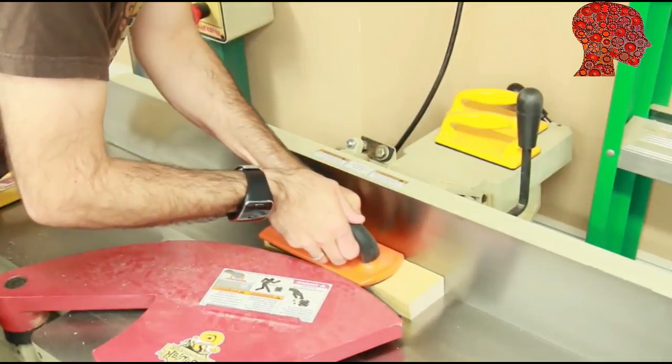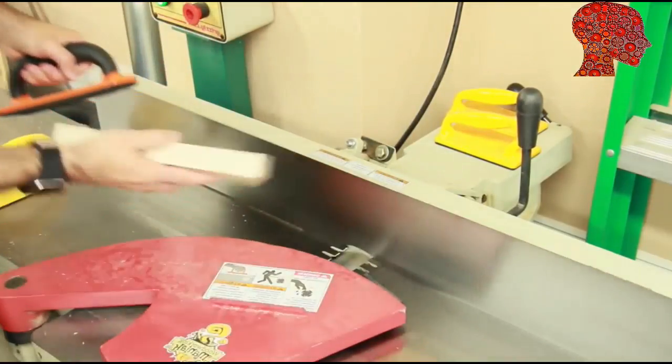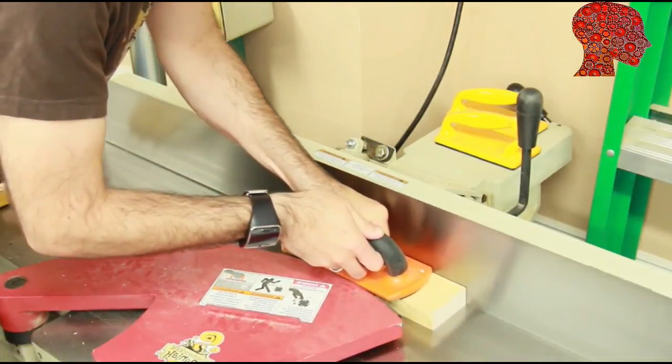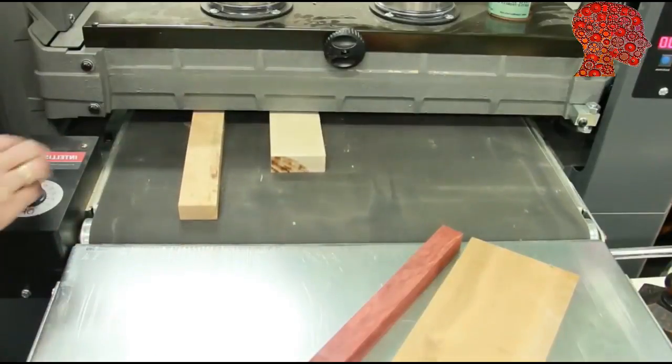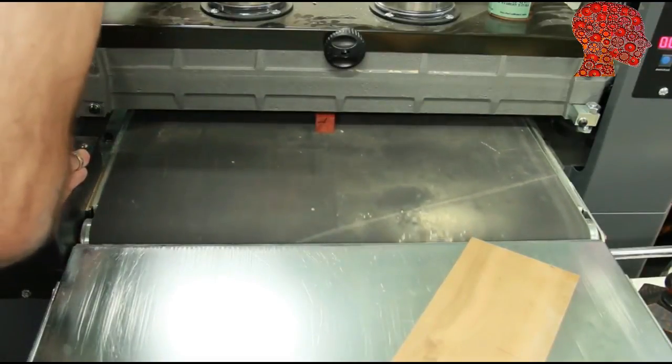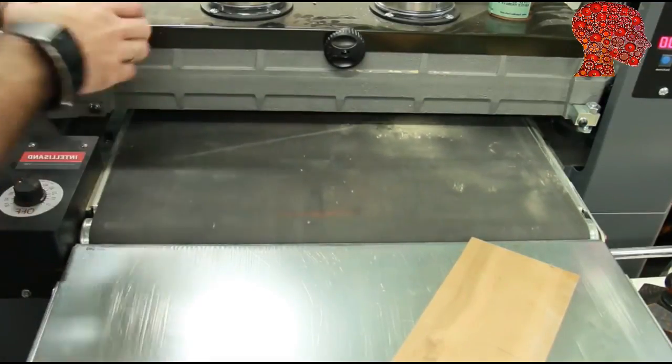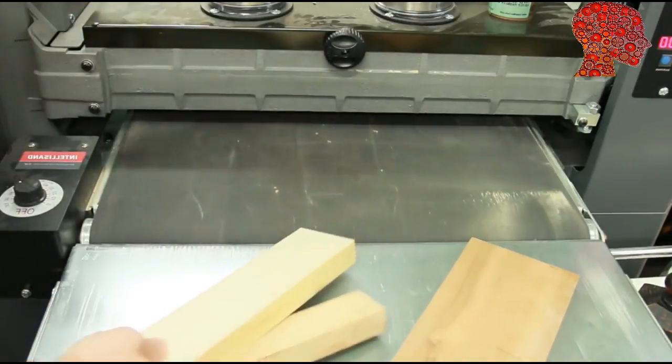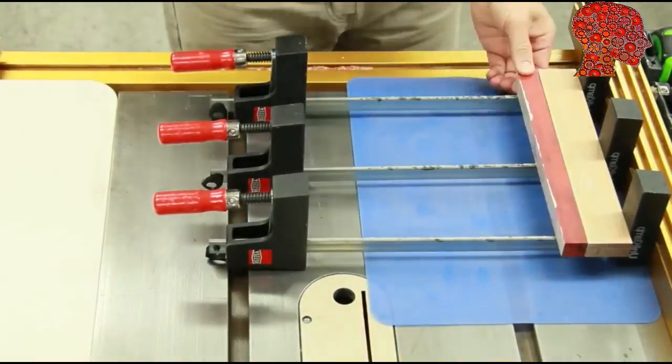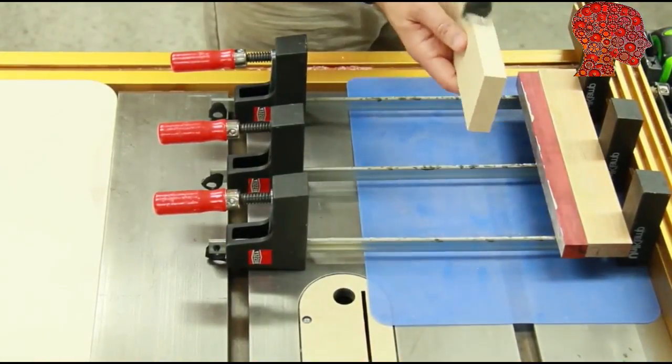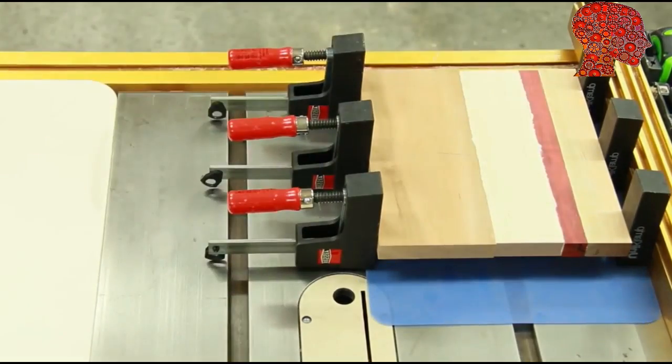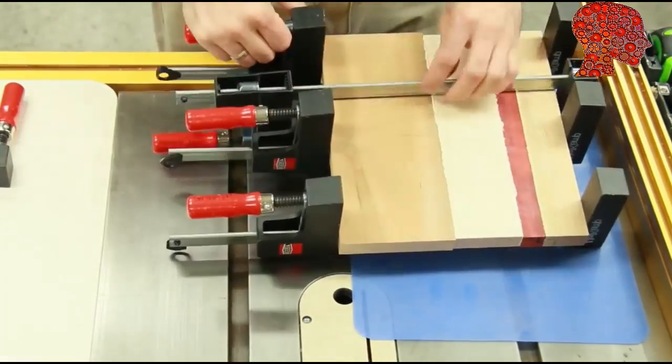Then at the jointer, I jointed one side to get all the boards nice and flat on one side, because these boards were all different thicknesses. I actually needed to get them to the same thickness. Now, to get them to the same thickness, I used my drum sander because they all had some different grain patterns. I didn't want to send them through my planer because that could have caused a lot of tear-out, especially on the curly maple. The curly maple would have definitely torn out. So I ended up sending them through my drum sander to save that grain, and a quick high-speed glue up here.